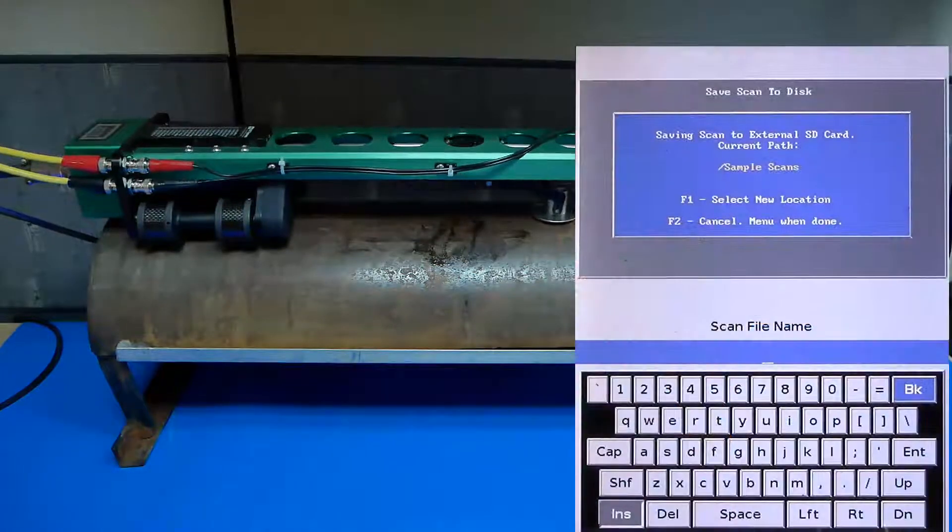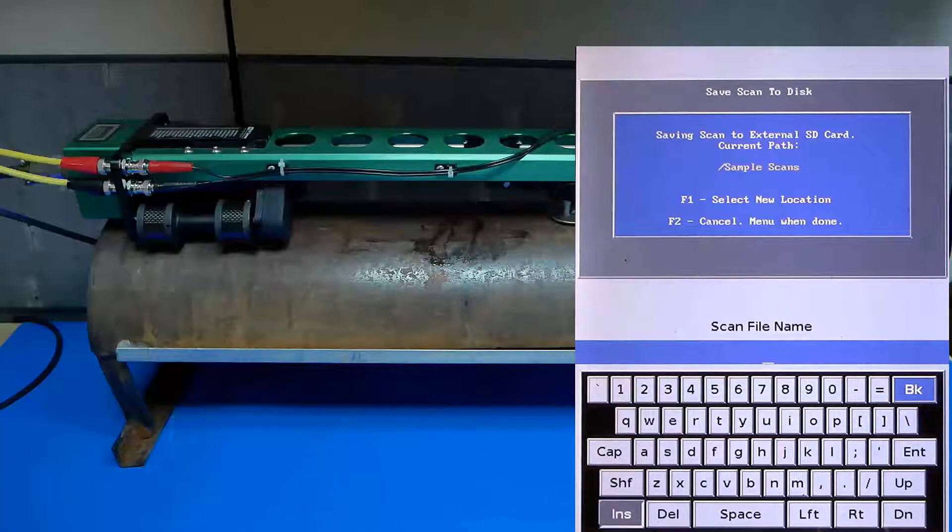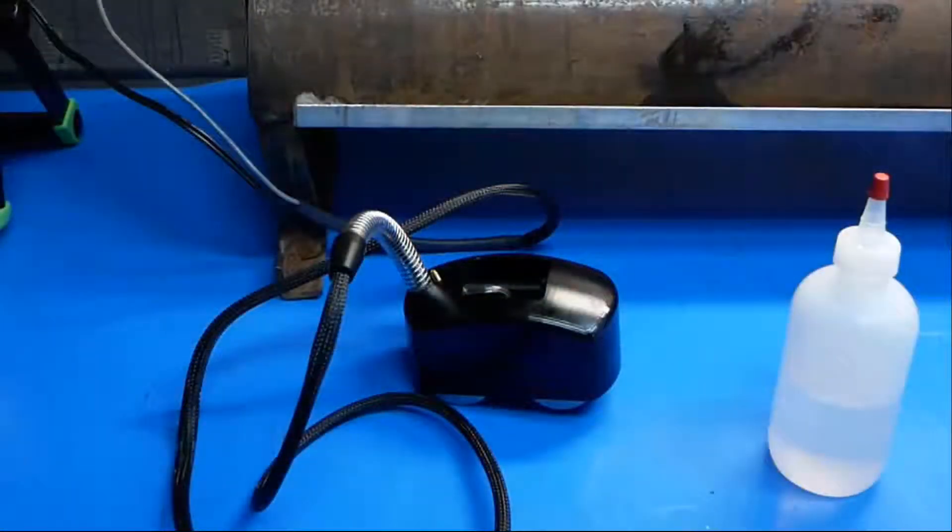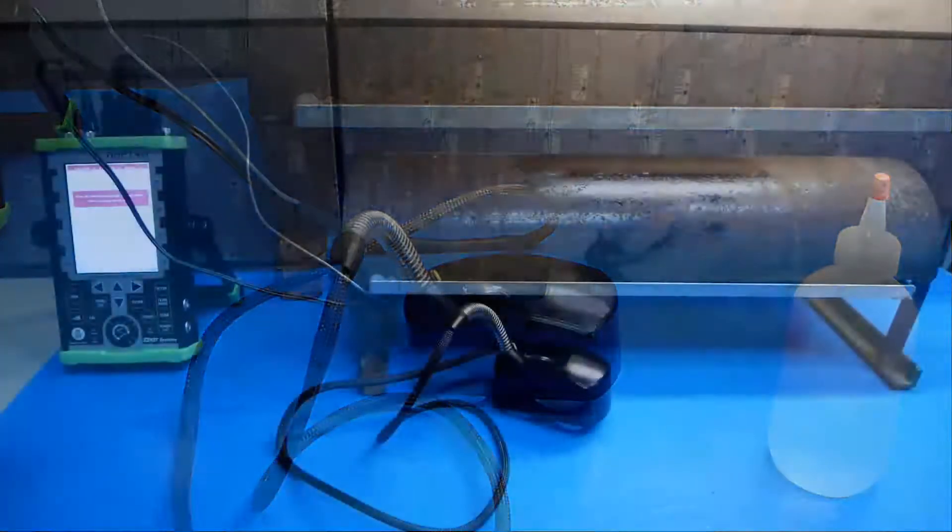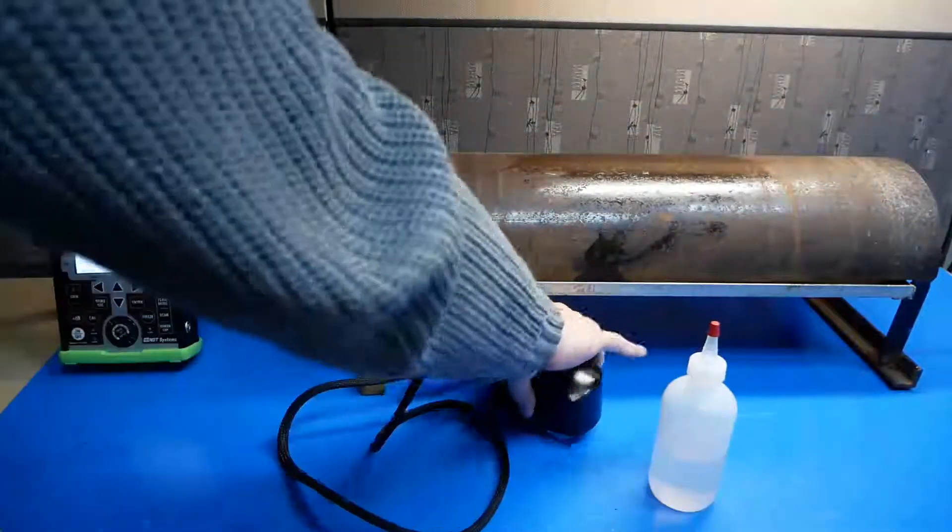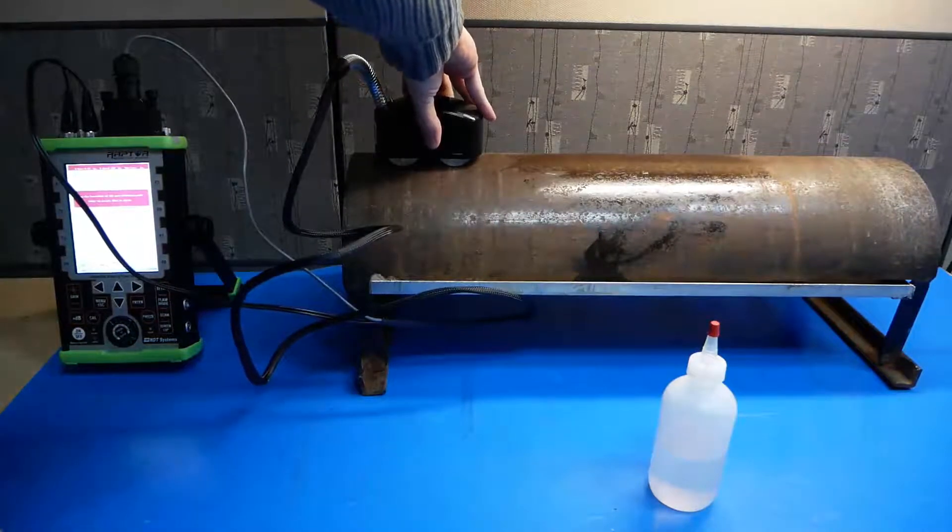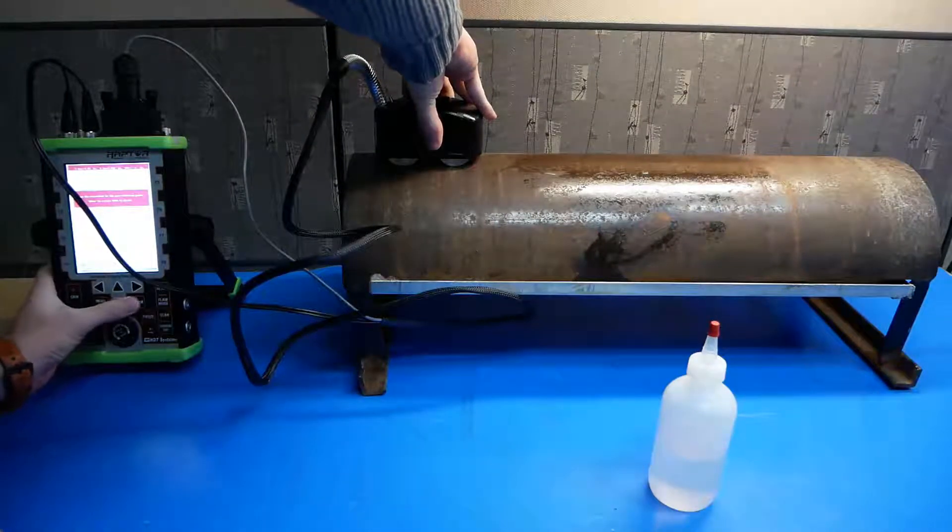Once the scan is completed, this data can be exported for easy reporting. Included in the Raptor CIS kit is the Armadillo hand scanner. This little scanner can perform manual B-scans, useful for spot checking and following B-scan procedures.